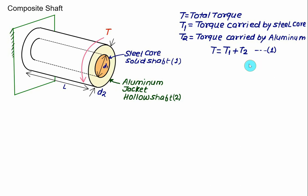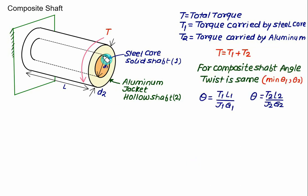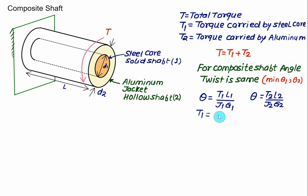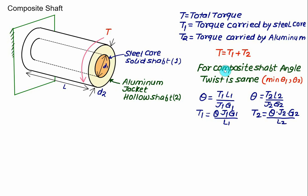The second equation is the compatibility equation. Since we have parallel shafts in a composite shaft, the twist is the same for both. So theta = t1·l1/(j1·g1) for the steel core equals theta = t2·l2/(j2·g2) for the aluminium jacket. From this we can express t1 = (j1·g1·theta)/l and t2 = (j2·g2·theta)/l.